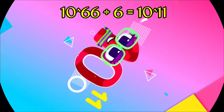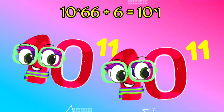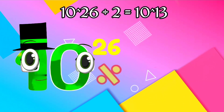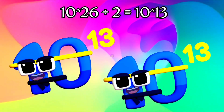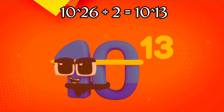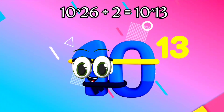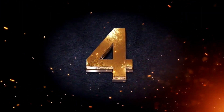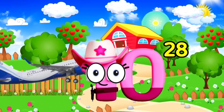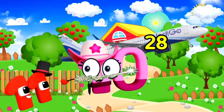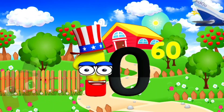I am 100 billion and I've got 11 zeros. Equals. Ten Trillion. Ten Octillion. I am Novendecillion, and I have 60 magical zeros.